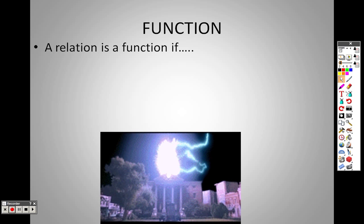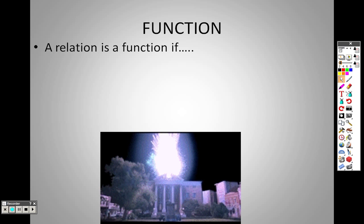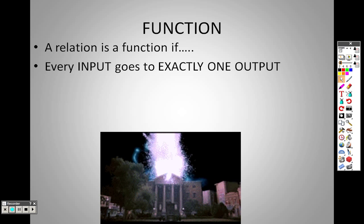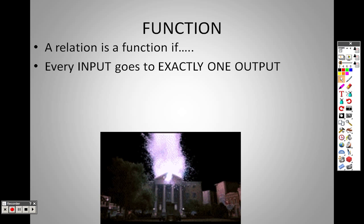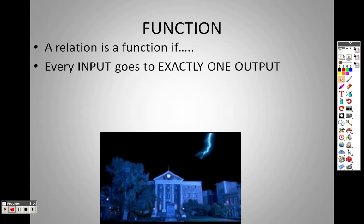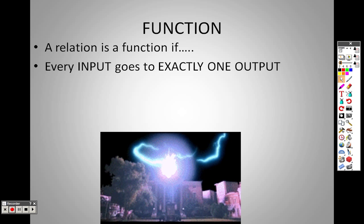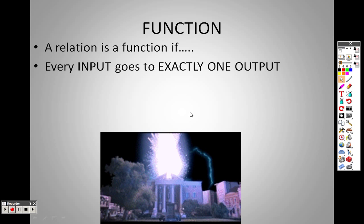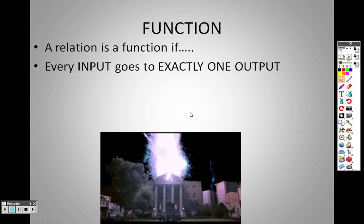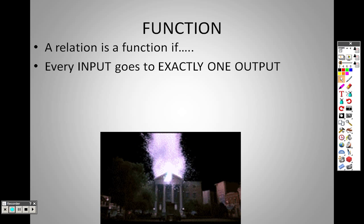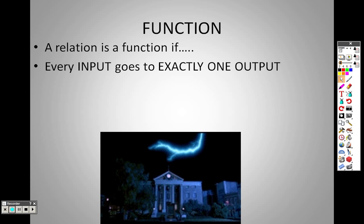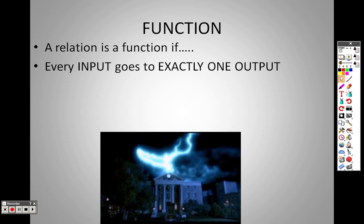A relation is a function if — and make sure you write this down — a relation is a function if every input goes to exactly one output. This is very key. Every input needs to go to exactly one output. In those circumstances, your relation is a function.